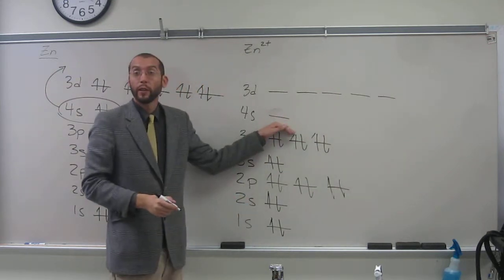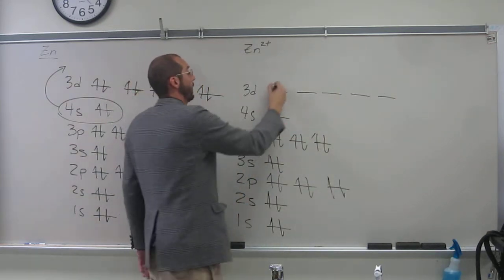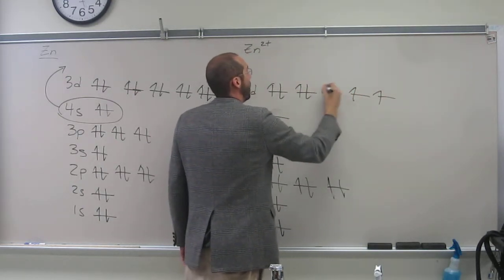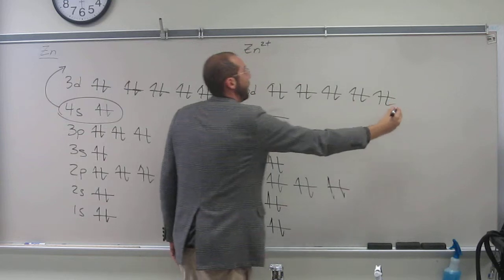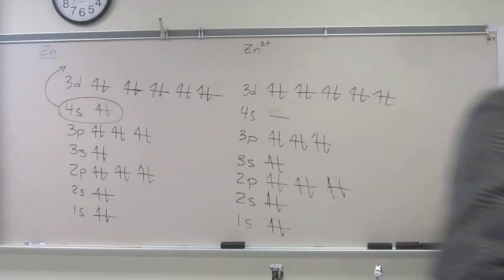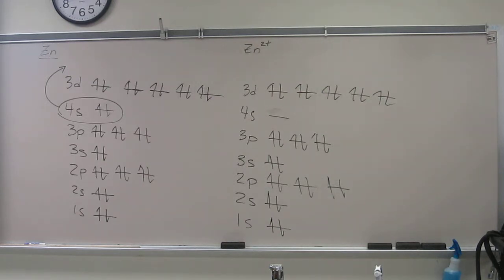So those are the electrons that we lost, right? So again, once the D shell is filled up, or the D subshell fills up, it becomes more stable than the S previous to it.